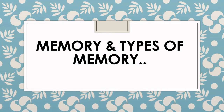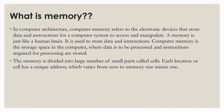In the first slide we have: what is memory? In computer architecture, computer memory refers to the electronic devices that store data and instructions from a computer system to access and manipulate. A computer is just like a human brain — it is used to store data and instructions. Computer memory is the storage space in the computer where data is to be processed and instructions required for processing are stored. The memory is divided into a large number of small parts called cells. Each location or cell has a unique address which varies from 0 to memory size minus 1.